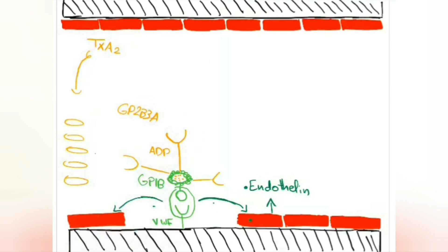For example, this platelet is expressing the same receptor, GP2b3a. These two platelets are going to attach together through fibrinogen — and the same happens here, and here, and so on.